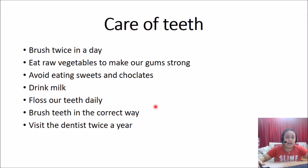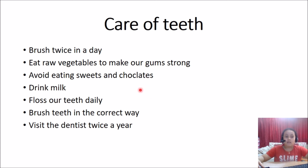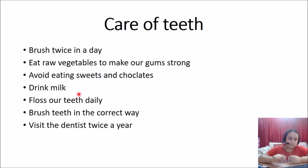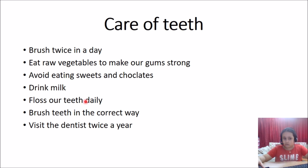Now let's find out how to prevent those things from happening. We can brush our teeth twice a day, eat raw vegetables to make our gums strong, avoid eating sweets and chocolates, drink milk regularly, and floss our teeth daily. Flossing removes small pieces of food stuck between your teeth so it doesn't look dirty. You also have to brush your teeth in the correct way, and visit the dentist twice a year — once every six months.